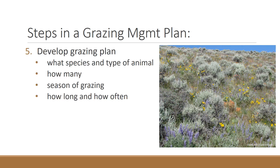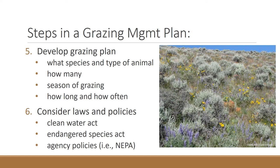The next step is to actually sit down and develop the plan. A plan would include what type of animal, how many, when to graze, and how long — the core elements of a good grazing plan. You also need to consider laws and policies that restrict your options. On private land: the Clean Water Act, the Endangered Species Act, zoning laws, and possibly easement policies. On federal lands there are additional policies: the National Environmental Policy Act (NEPA), the Federal Lands Policy and Management Act (FLPMA), and the Endangered Species Act, among others.